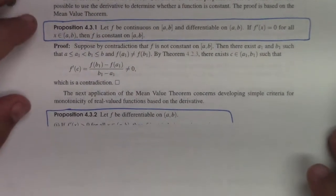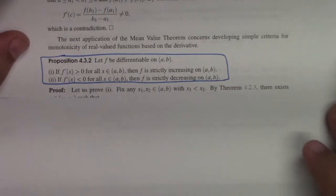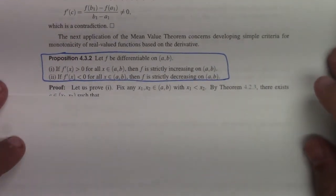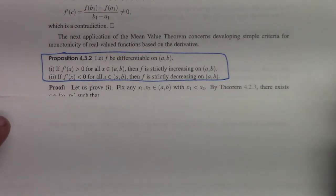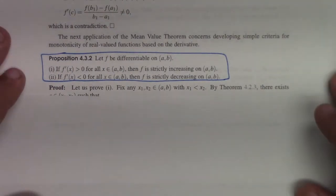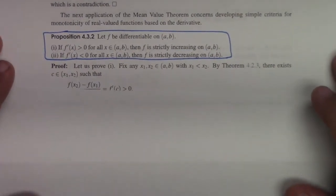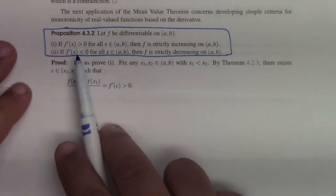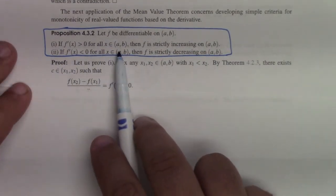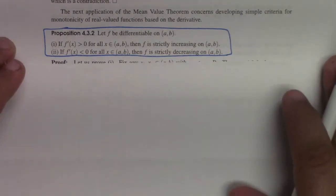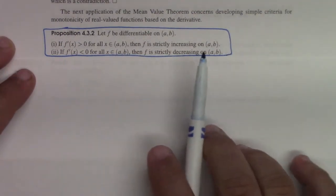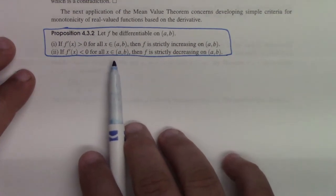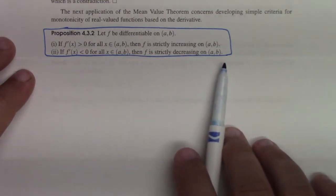The next thing is to connect positive or negative derivatives with increasing and decreasing functions. If f′(x) > 0 for all x in the open interval, then f is strictly increasing on that interval. Likewise, if the derivative is negative, then f is strictly decreasing.